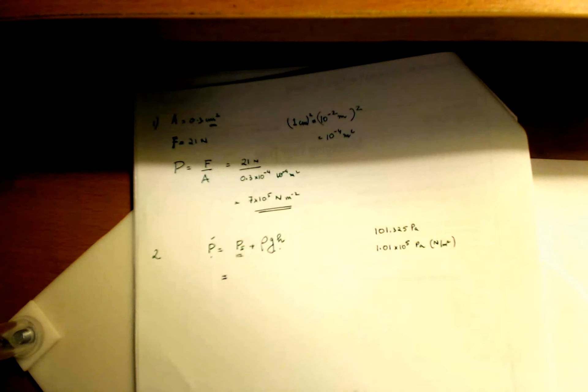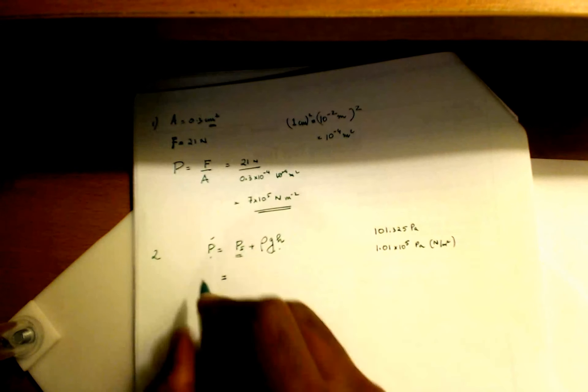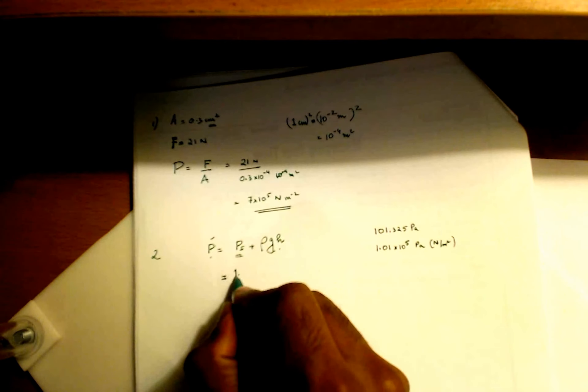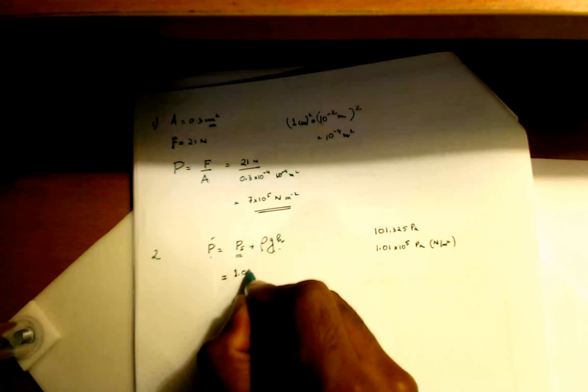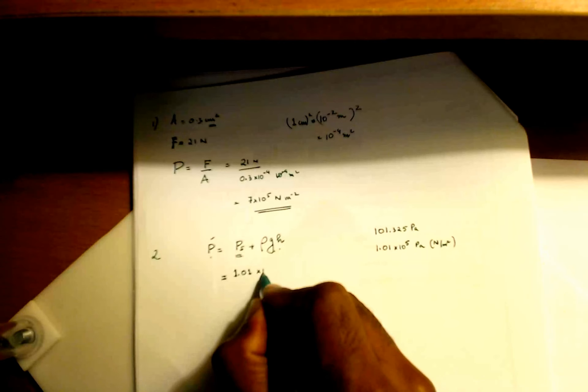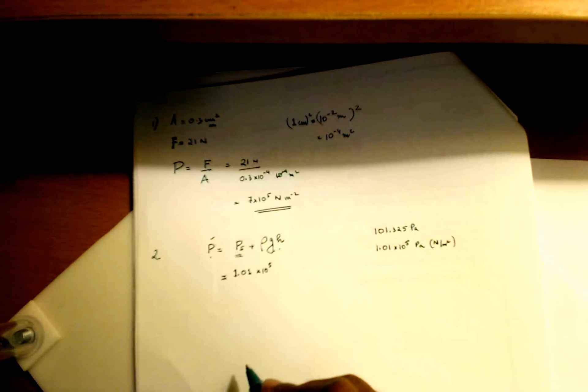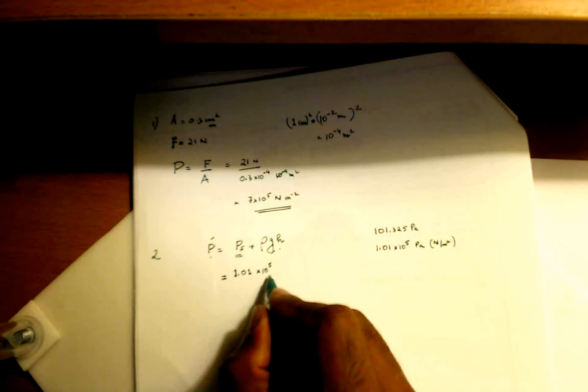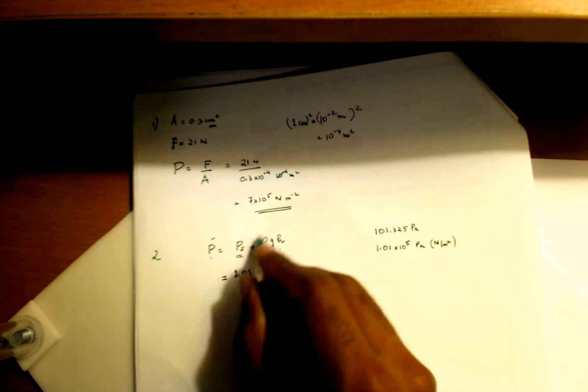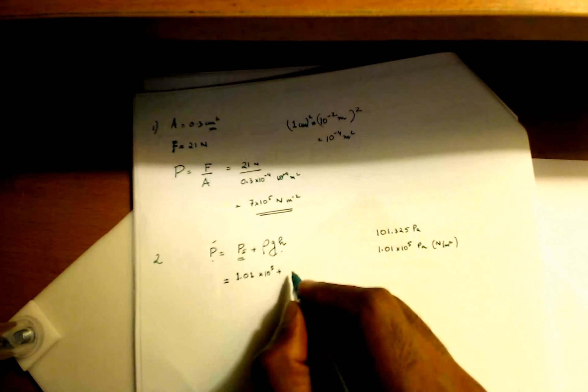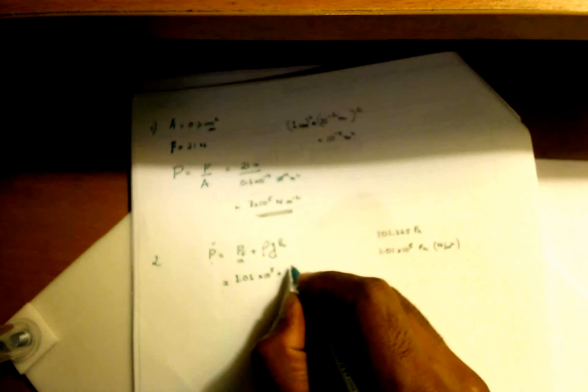Pascal is Newton per meter squared because pressure is force per area. So I'm going to use the second value because as a matter of convenience and because the answer choices would still be valid using this value. I'm going to go ahead and use 1.01 times 10 raised to 5.